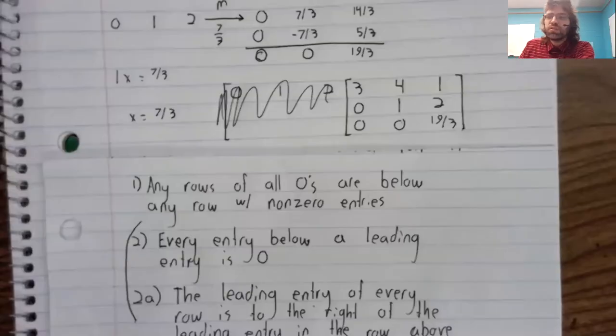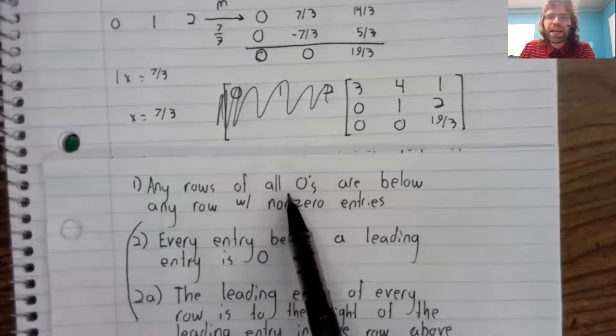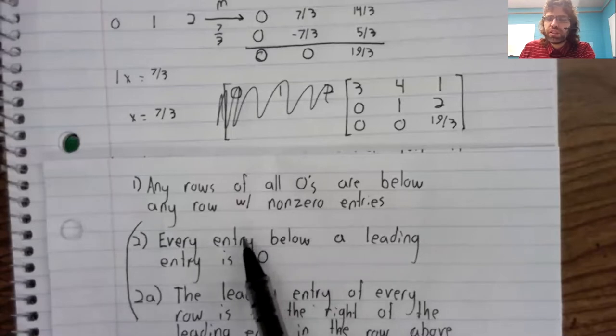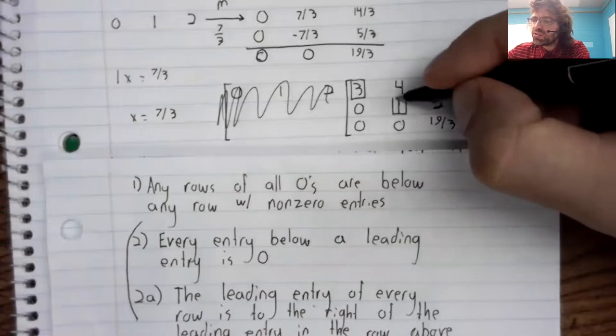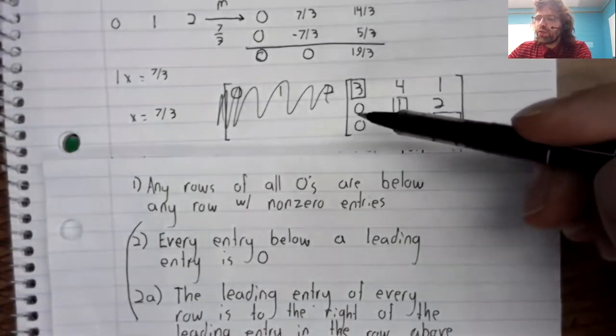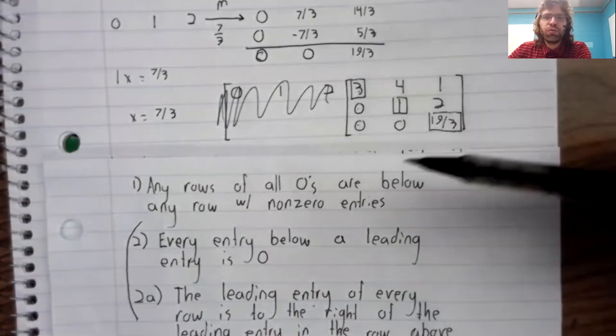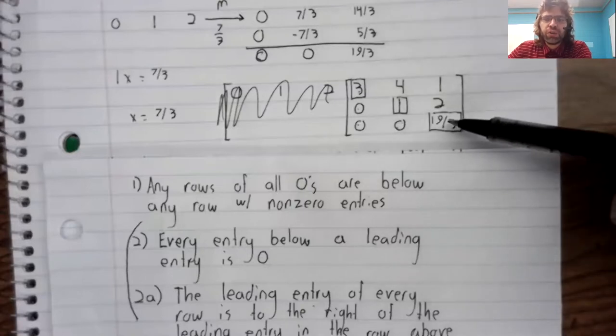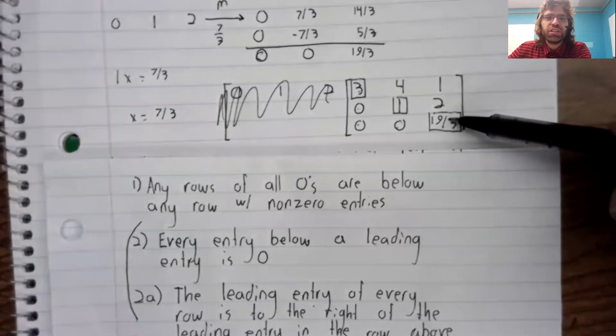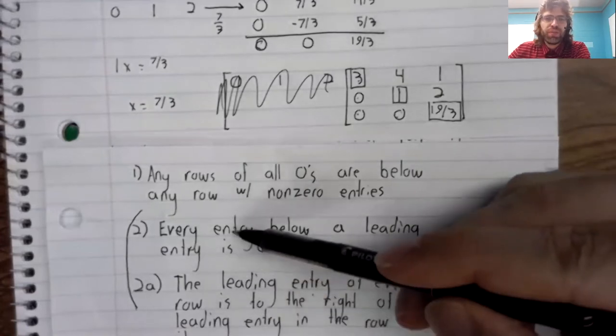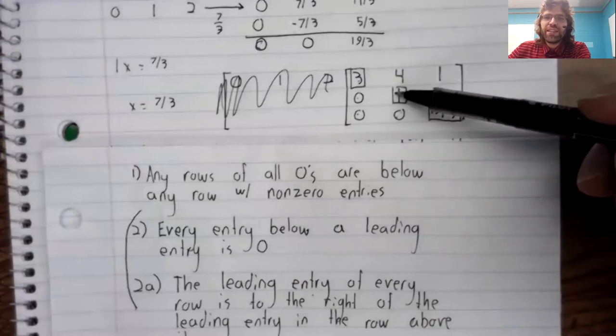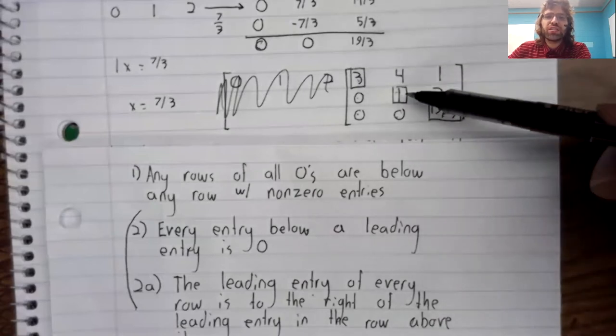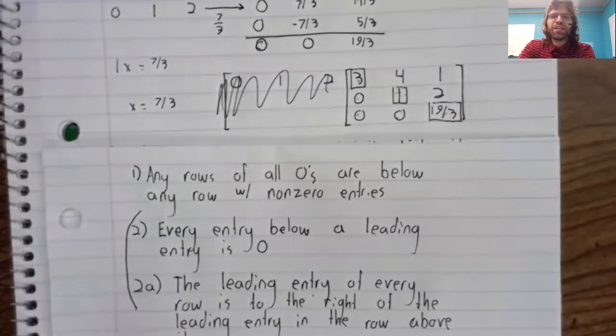It satisfies this condition automatically. There are no rows of all zeros. And as for this condition, our leading entries are this, this, and this. Everything below this leading entry is zero. Everything below this leading entry is zero. Equivalent to this, the leading entries do go right as we descend this matrix. One is to the right of three. 19 thirds is to the right of one. And that's Gaussian elimination.